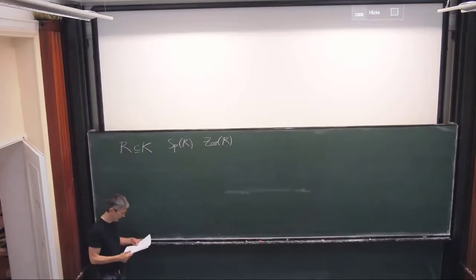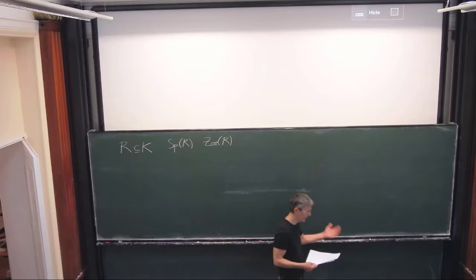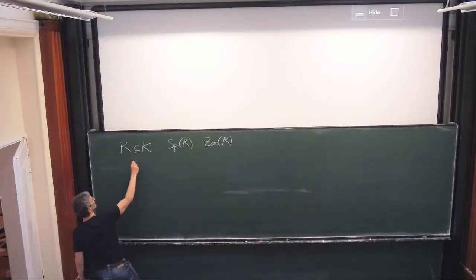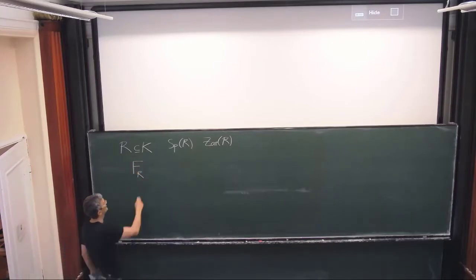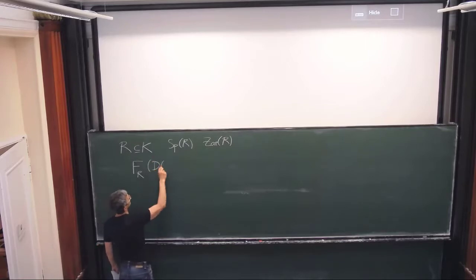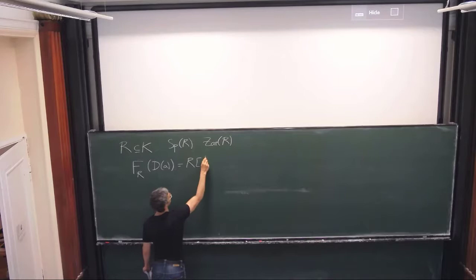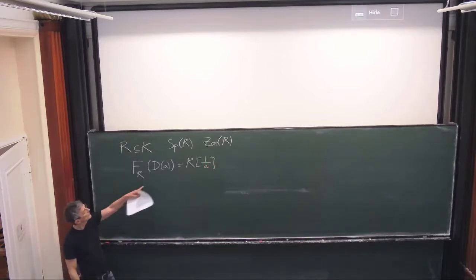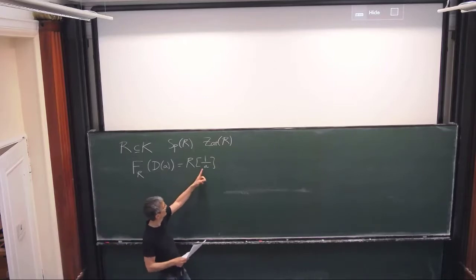I will not do this again. On this lattice, seen as a space, we defined a sheaf, a structure sheaf, and we defined it only on a basic open set. The definition was simple: it's just the localization — we invert a. This is inside the field of fractions if a is different from zero; if a equals zero, then you have a problem — everything collapses.